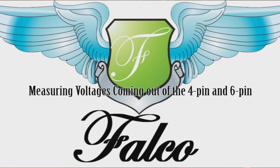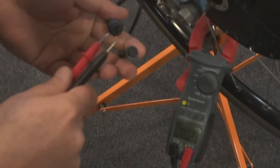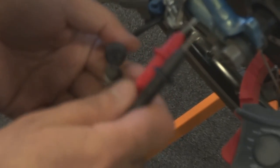We're going to see how we can measure the voltages on the 4-pin and 6-pin connectors coming out of the Falco hubs. And these voltages essentially tell us whether the hub is healthy or not.